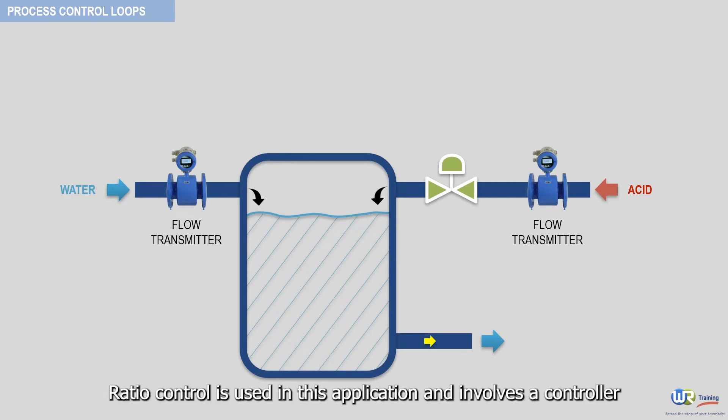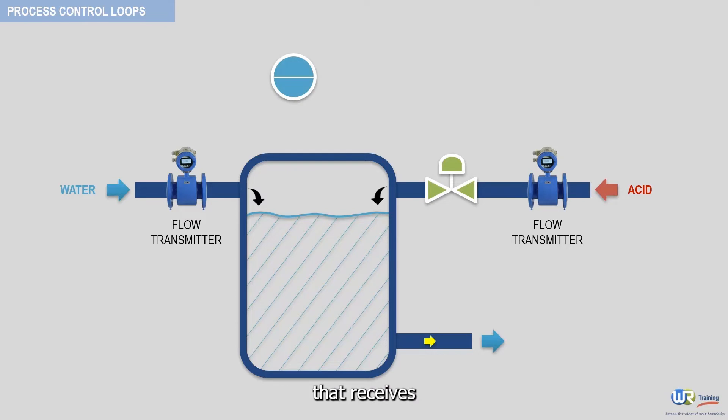This is illustrated in the following example. Ratio control is used in this application and involves a controller that receives input from a flow measurement device on the unregulated flow, which is in our case here water.